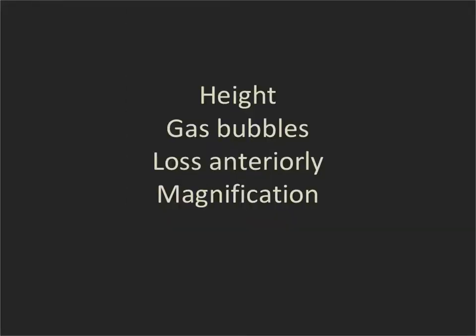There are four clues, some of which work in all patients, and sometimes only one of them works, and in a minority of chest X-rays it's impossible to tell. These are: height, gas bubbles, loss of the diaphragm anteriorly, and the magnification of one hemithorax. I'm going to go through these in order.